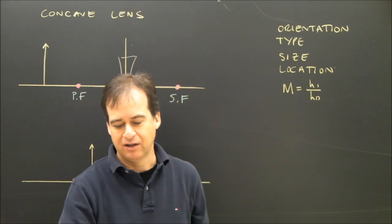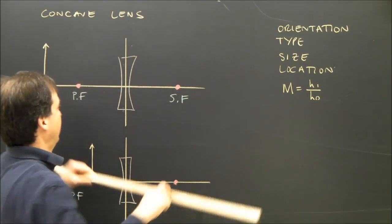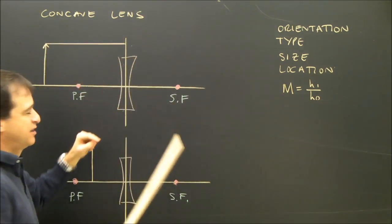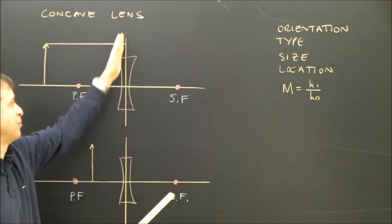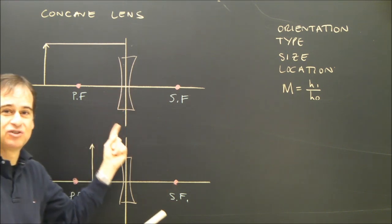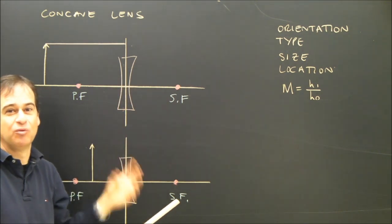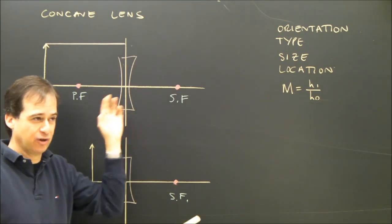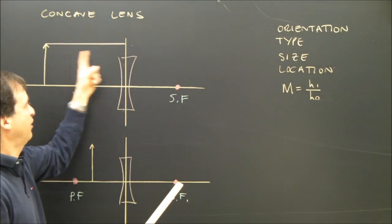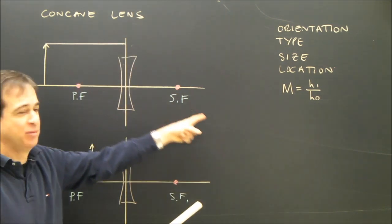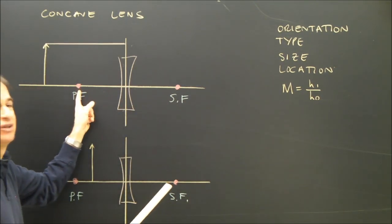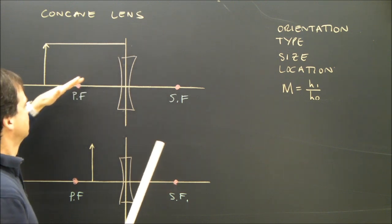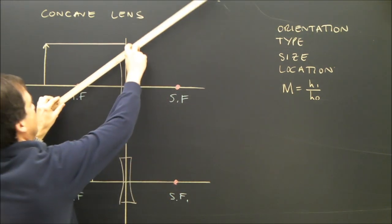So let's take a look at it. We had a parallel ray. A parallel ray hits the lens. Keep in mind, this line represents the lens. This actual picture of a lens is there just so you know what kind of lens it is. So it hits the lens, and in the rules it said for a convex lens that a parallel ray goes through the primary focus. But the primary focus is on this side. So what I'm going to do is I'm going to bend that ray so that it sort of goes through the primary focus.